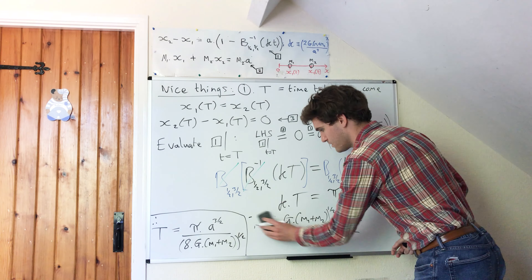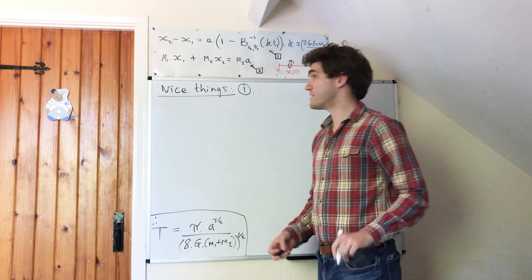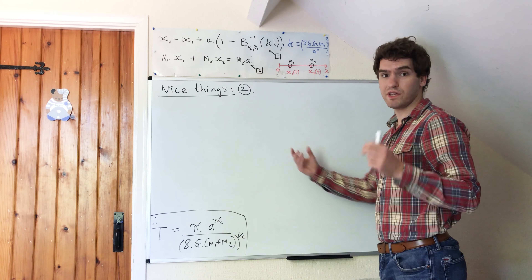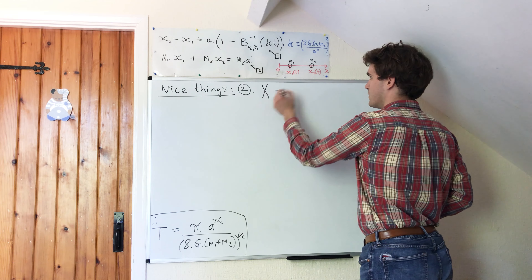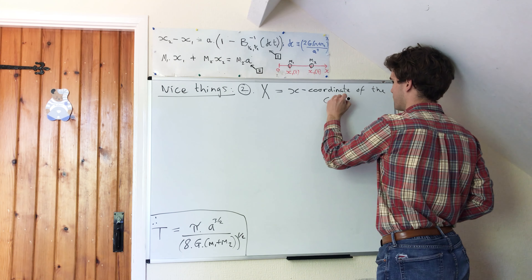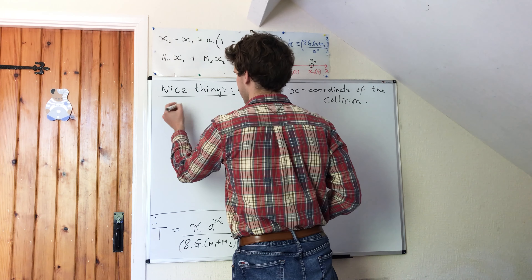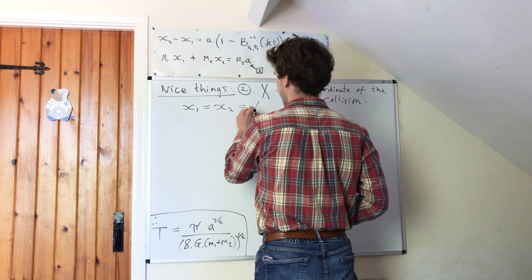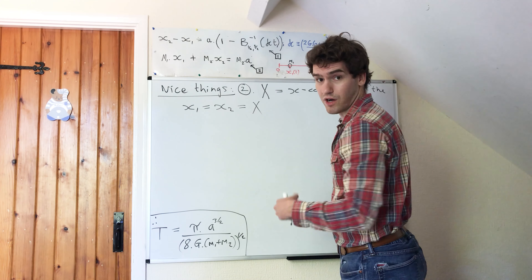So let's see what other nice things we can get from this. The second nice thing is: well, what other useful information can we want? We might want to know the position on the x-axis where they collide. So we might also want to know big X, the x-coordinate of the collision. This will simply be defined as x1 of big T equal to x2 of big T equal to big X. Since we don't know what x1 and x2 are explicitly yet, we'll have to use one of these equations to do this.